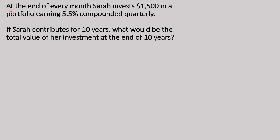Now let's look at a question on ordinary general annuity. At the end of every month, Sarah invests $1,500 in a portfolio earning 5.5% compounded quarterly. If Sarah contributes for 10 years, what would be the total value of her investment at the end of 10 years? This is an ordinary general annuity because the payments are made monthly but the interest is compounded quarterly — the frequencies don't match.